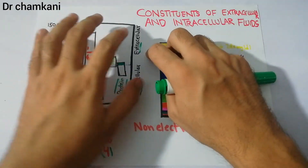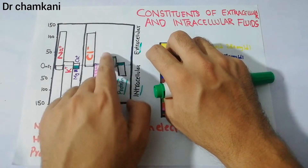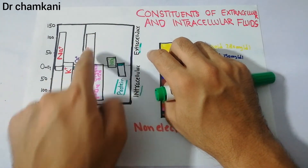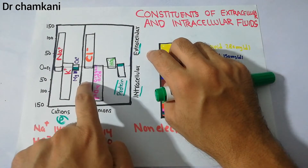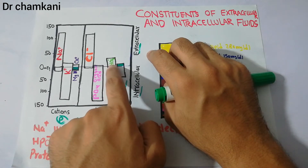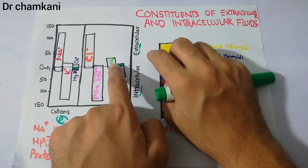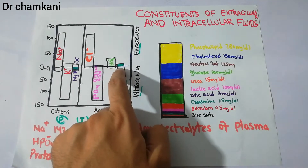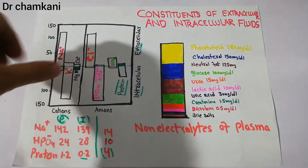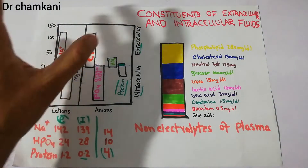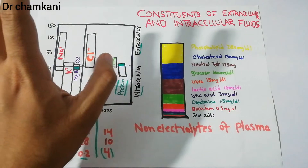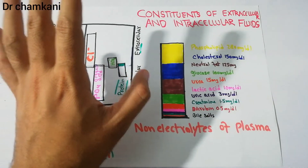Chloride is higher in the extracellular fluid and lower in the intracellular fluid. Bicarbonate is present mainly in the extracellular fluid, with only a small amount in the intracellular fluid. This is the story for each of these electrolytes.